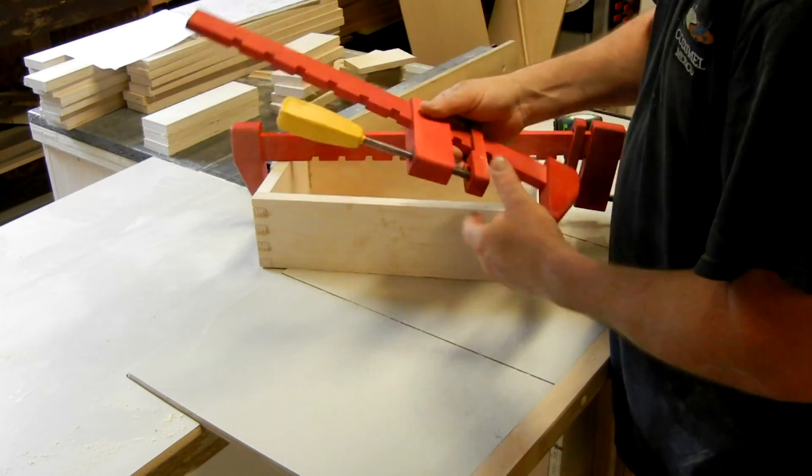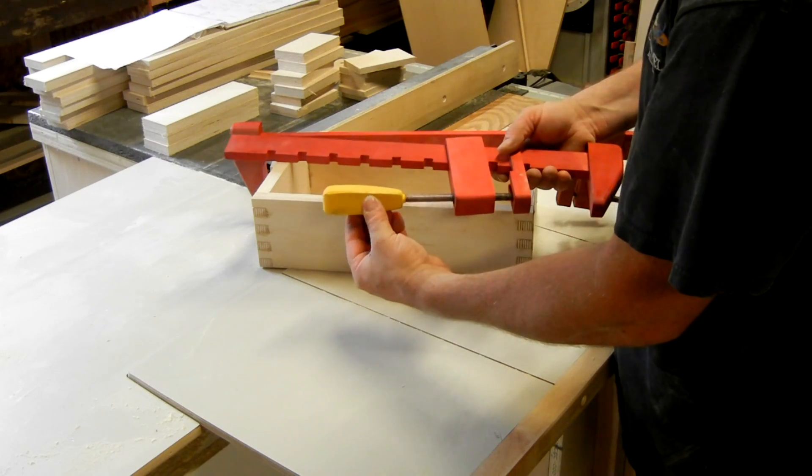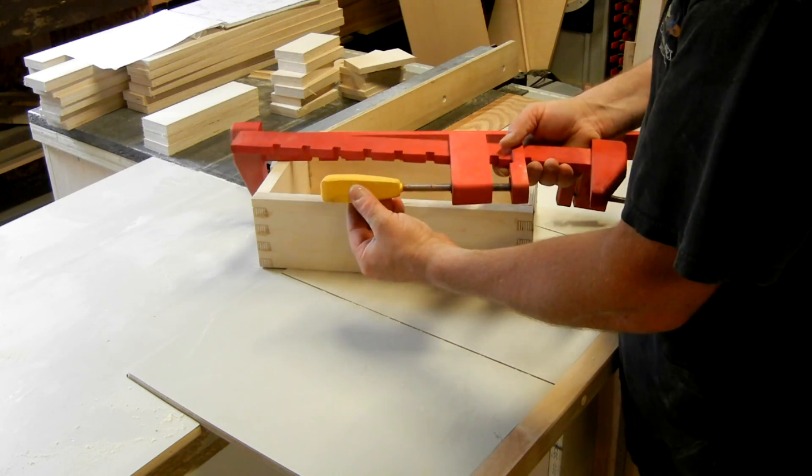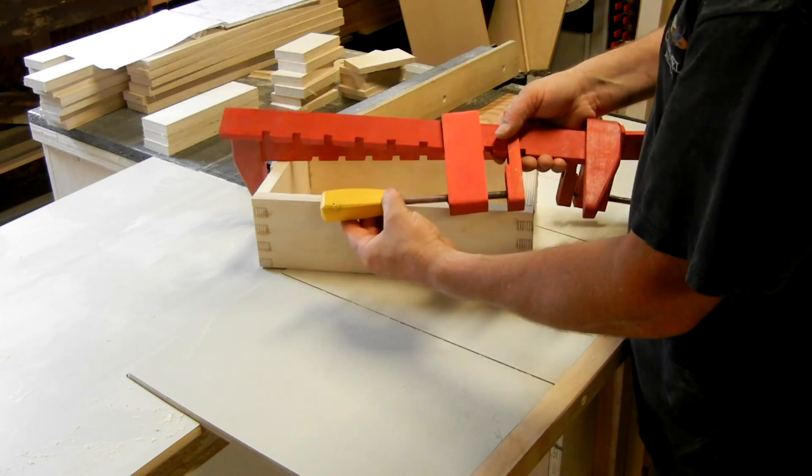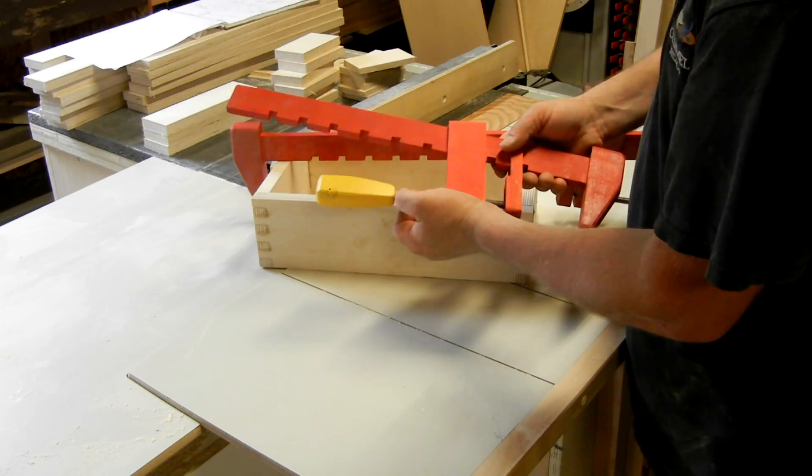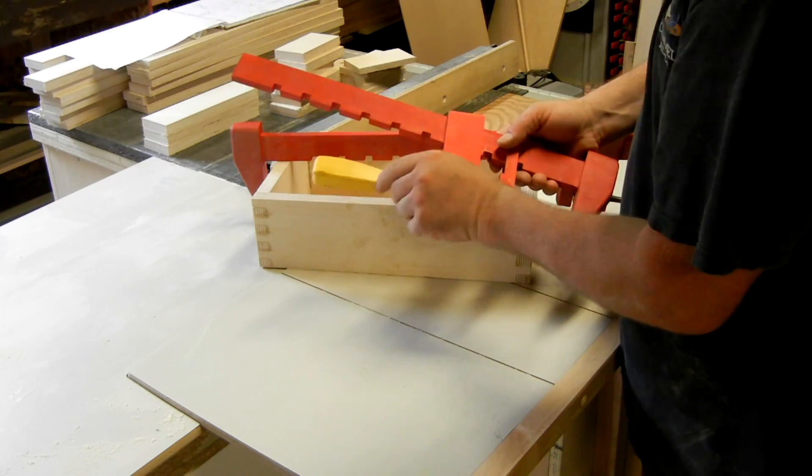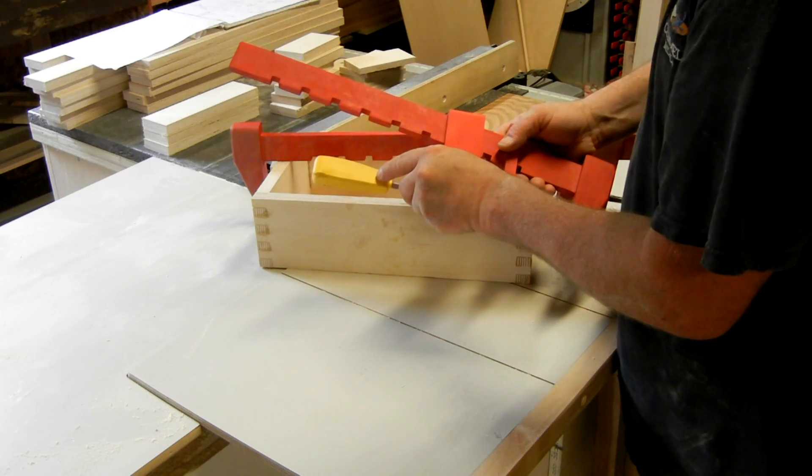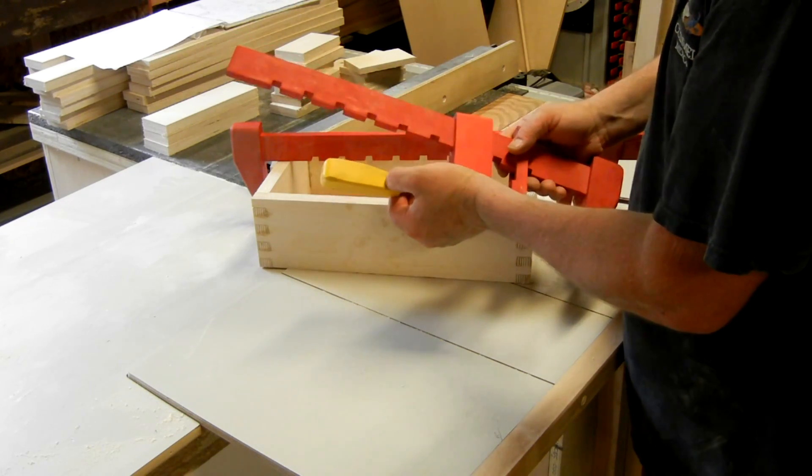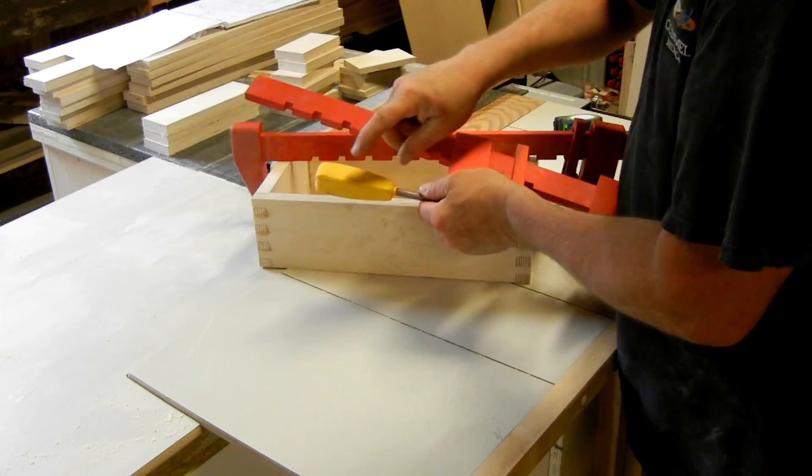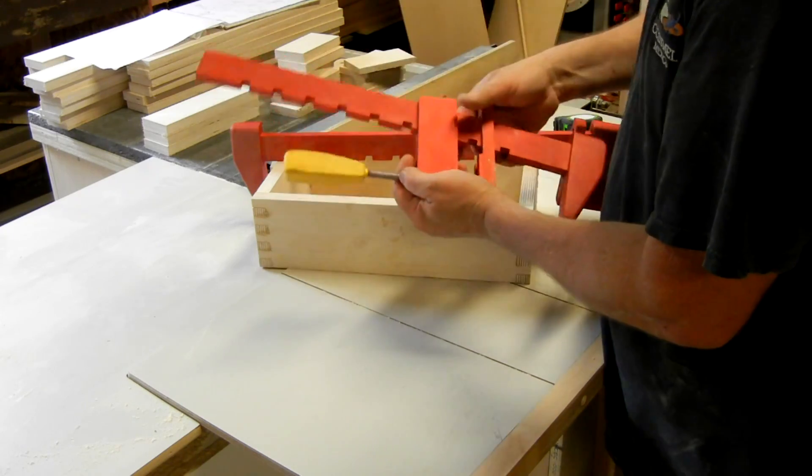The handle is just a piece of one by one that I cut and then tapered on my disc sander to this shape. It has a three-eighths hole drilled in about an inch and a half deep. And I drilled straight through with a one-sixteenth inch drill bit and stuck a nail through. Also, the handle is glued onto the shaft, onto the threaded rod with PL Premium.